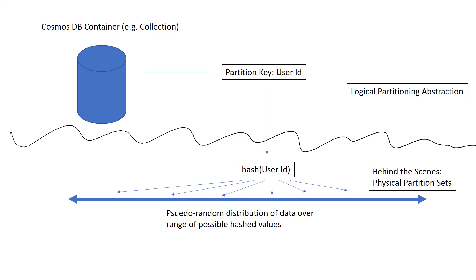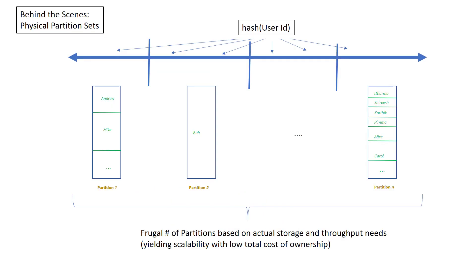The nice thing about consistent hashing is, number one, it has a hashing mechanism so that you get a nice pseudo-random distribution, load balancing all of these partition keys across a broad spectrum of values. This means you don't have to worry about sequential IDs causing skewness in how you co-locate data on the underlying partitions. If you have IDs like 12345, the hashing mechanism will effectively load balance them across a very broad spectrum of values.